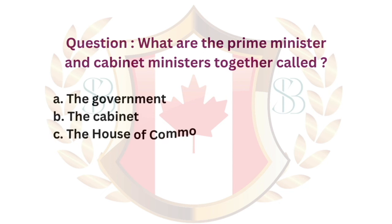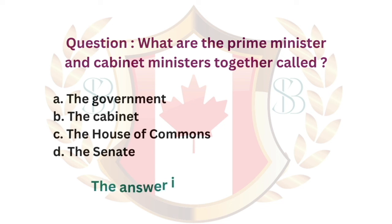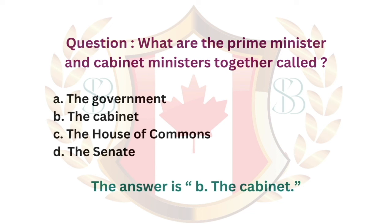Question. What are the prime minister and cabinet ministers together called? a. The government. b. The cabinet. c. The House of Commons. d. The Senate. The answer is b. The cabinet.